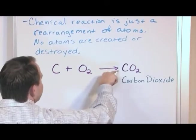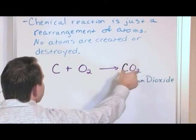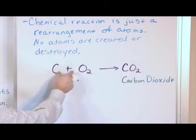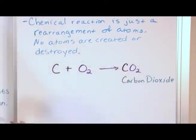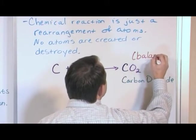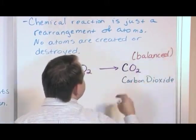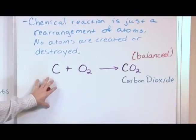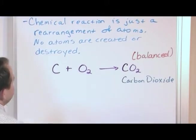So the arrow means this is the direction the reaction goes. This is the product, CO2. Carbon plus oxygen gives CO2. Now notice in this case the reaction is what we call balanced. So I'll write that here. Balance means, we'll talk about this when we study chemical reactions a lot more. But in this case you can see...